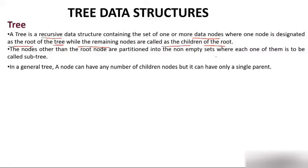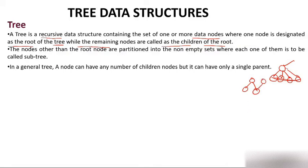In a general tree, a node can have any number of children, but it can have only a single parent. A node can have as many children as needed, but it will always have one parent. A node cannot have more than one parent — that would be totally wrong. A node can have only one parent.